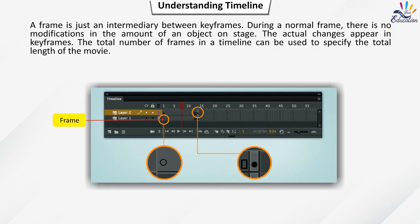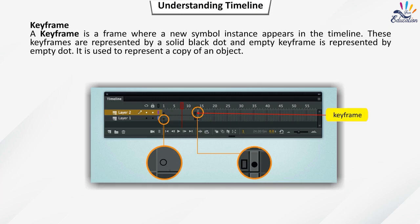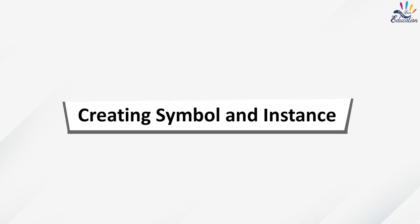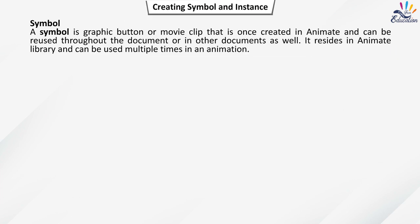The actual changes appear in keyframes. The total number of frames in the timeline specifies the total length of the movie. A keyframe is a frame where a new symbol instance appears in the timeline, represented by a solid black dot. An empty keyframe is represented by an empty dot and is used to represent a copy of an object. When creating animation using the frame-by-frame method, keyframes are inserted and changes are made — most frames in this method are keyframes.